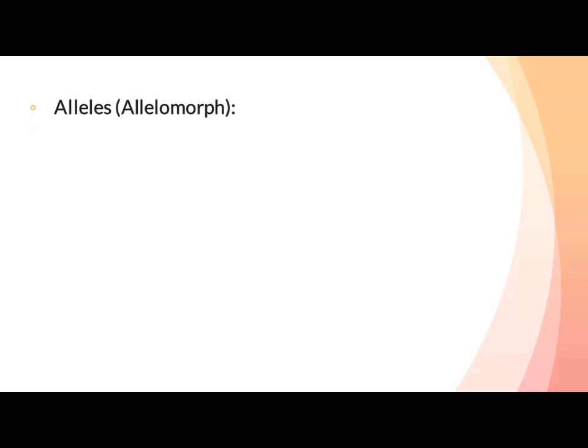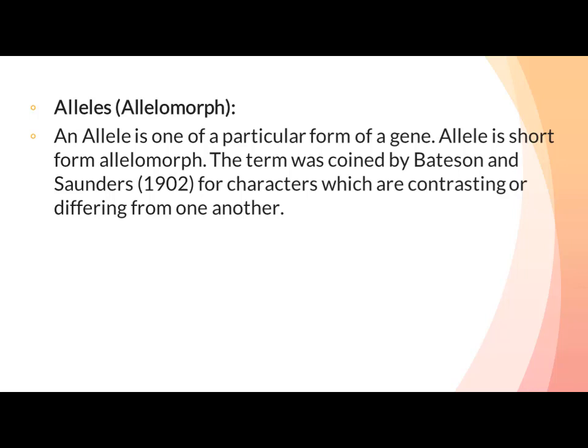Allele or Allelomorph: An allele is one of a particular form of a gene. Allele is the short form of allelomorph. The term was coined by Bateson and Saunders in 1902 for characters which are contrasting or differing from one another. Allele کو allelomorph بھی کہتے ہیں — کسی بھی gene کے دو یا دو سے زیادہ members ہوتے ہیں اور ہر ایک member کو allele کہتے ہیں۔ Allele is an alternate form of the same gene.